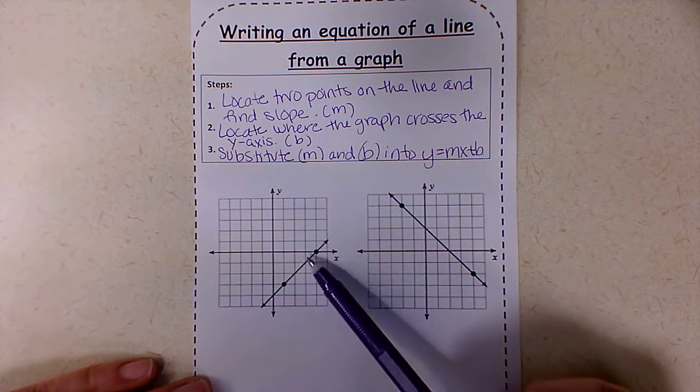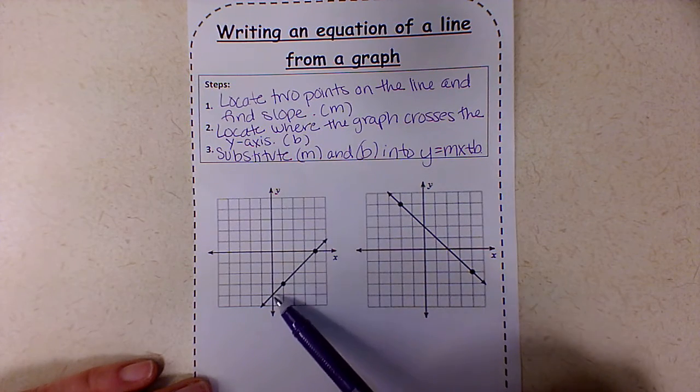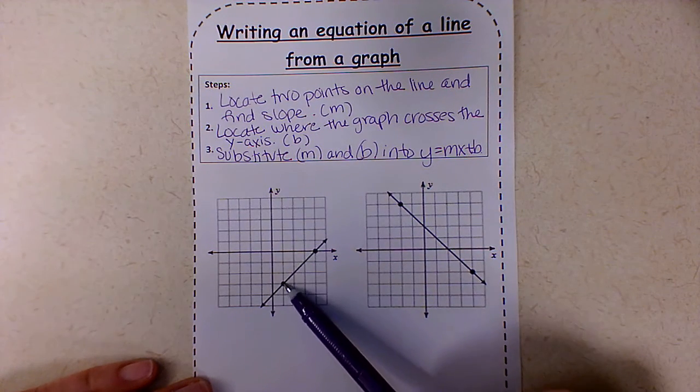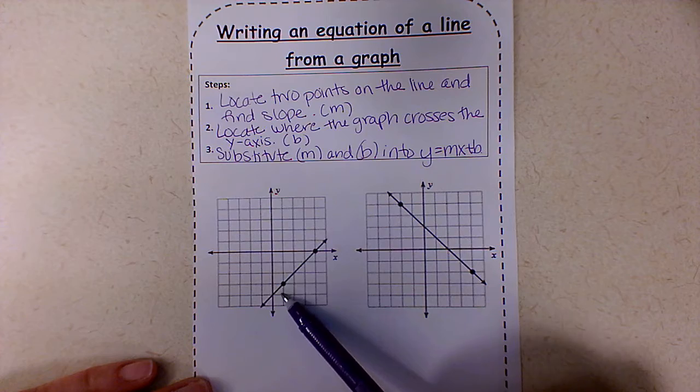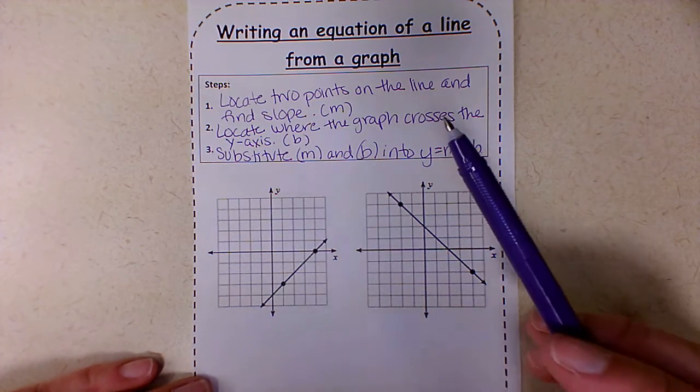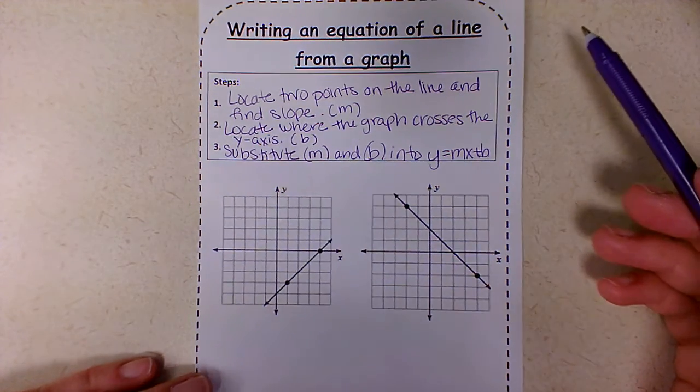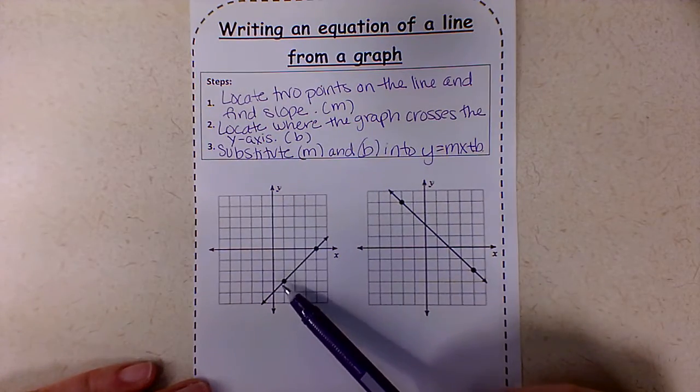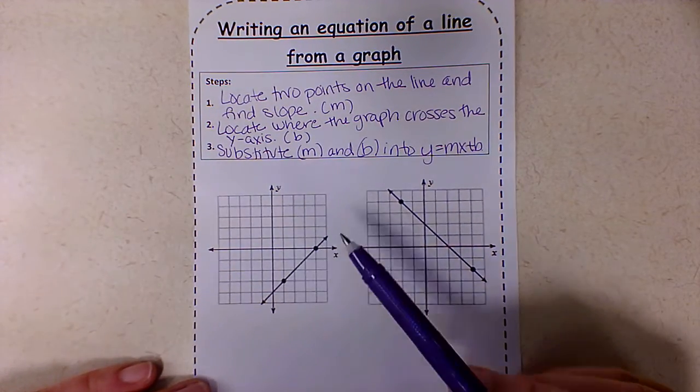So the two points have already been located for us, and I do want you to know that they go through the corner of these boxes here, and that's where we find those two points. Sometimes they're not going to be given to you, so that's how you locate them. But let's use our points here. We can do this a couple ways.